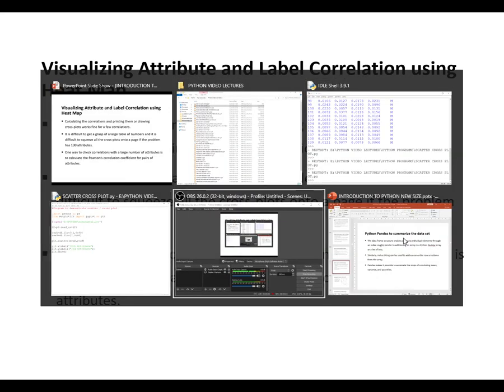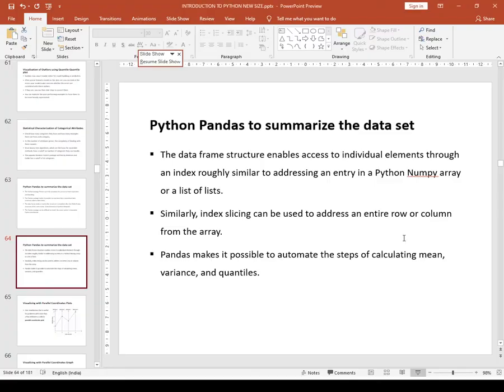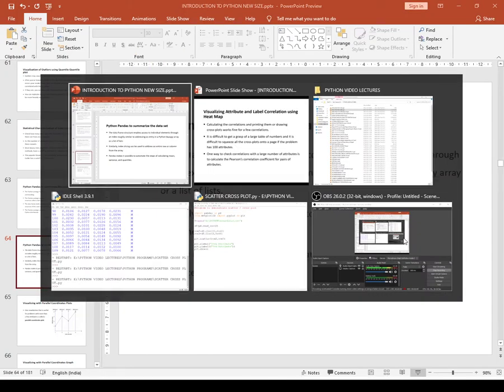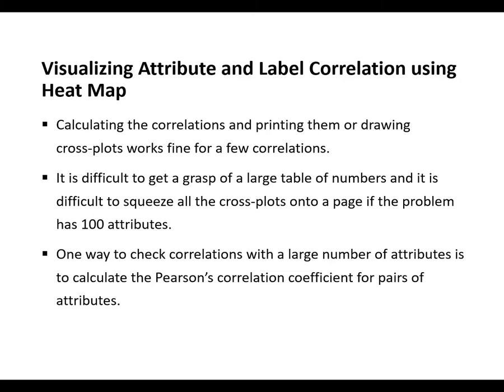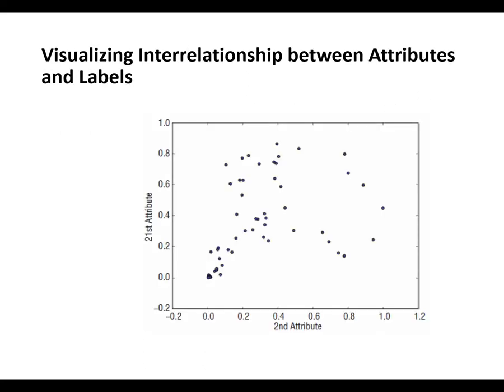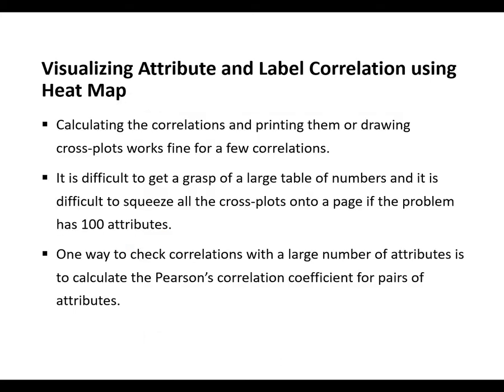Hello students, welcome to this new session. Last time we had studied the scatter plot both theoretically and programmatically in Python. Now in this session we want to study how the interrelationship between various attributes can be useful. We are also going to study a new dataset - the Abalone dataset - but first we study what a heat map is and how it shows the correlation between various attributes.